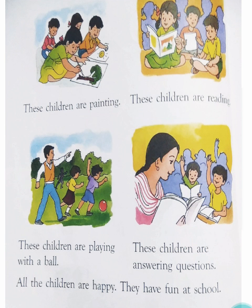जैसे आपकी bell बजती थी तो आप classroom में जाते थे, बिल्कुल वैसे। Now here, these children are painting — ये बच्चे painting करते हैं. These children are reading. These children are playing with a ball — ये बच्चे एक ball से खेलते हैं. These children are answering questions — ये बच्चे questions के answers देते हैं, जैसे कि मैं आपसे questions पूछती हूँ तो आप answer करते हैं. All the children are happy — सभी बच्चे बहुत खुश होते हैं. They have fun at school — school में मस्ती करते हैं।